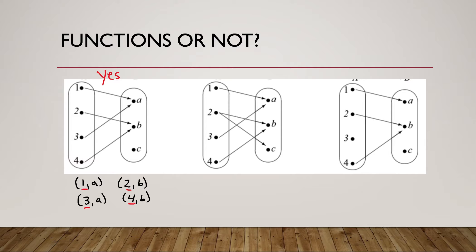Let's look at the second example. We have 1 going to a, 2 going to b, 2 also going to c, and 4 going to b. We need all of the x's to be different, and this 2 is my problem — I cannot duplicate the x values. So since that's happening, no, that is not a function.